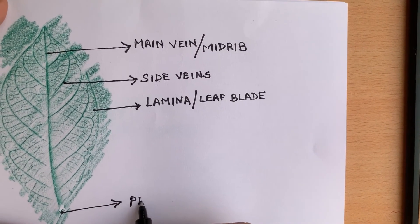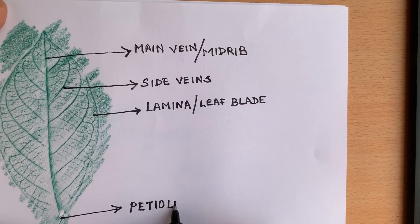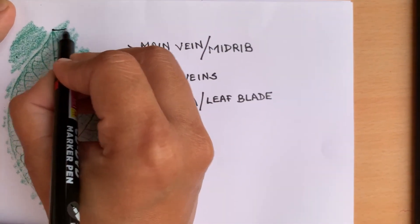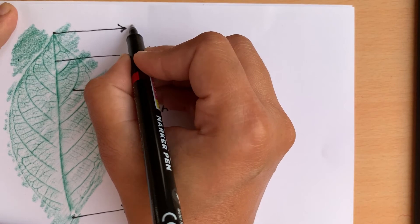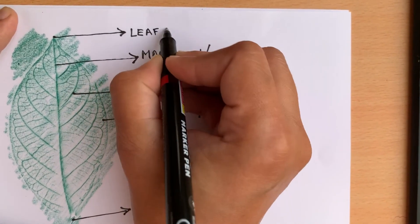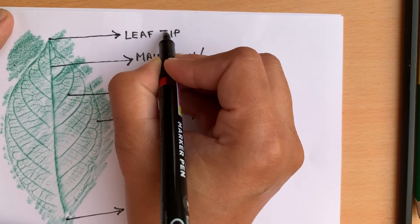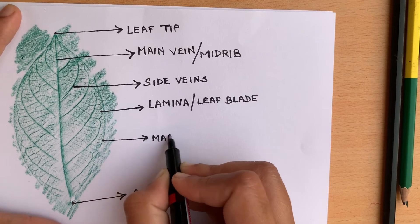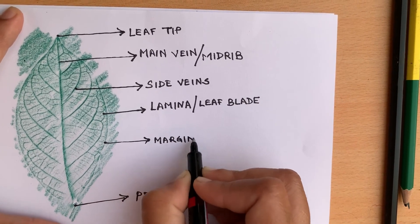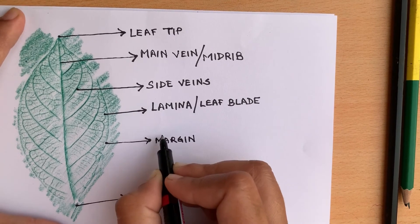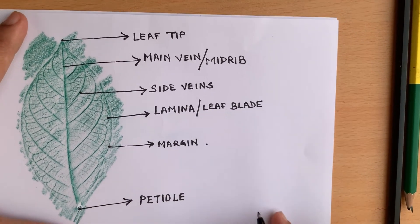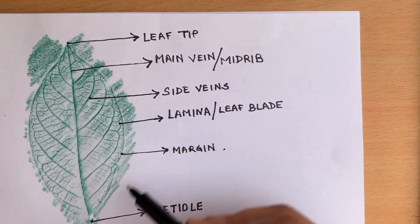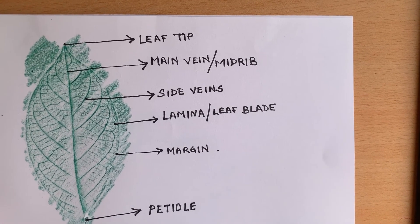Here we can see the petiole, from which the leaf is attached to the main stem. The upper part of the leaf is its tip, called the leaf tip. As you can see, the margin of the leaf is smooth. So this is the best way to draw a leaf and show its parts.